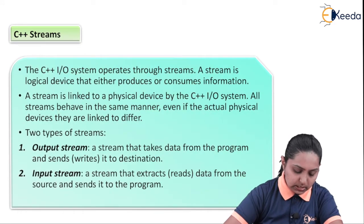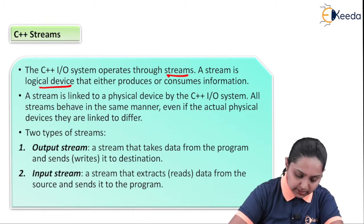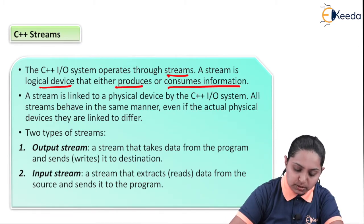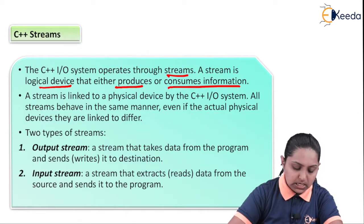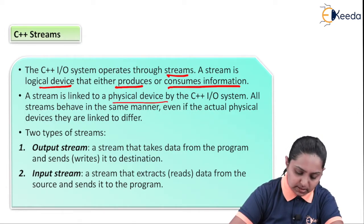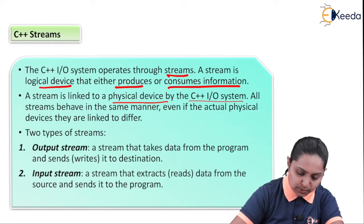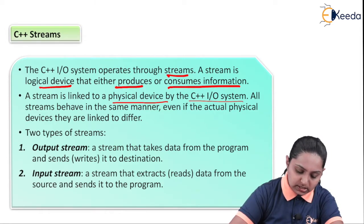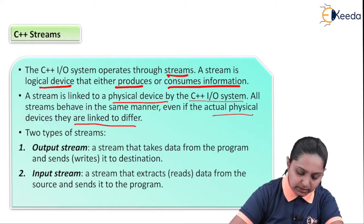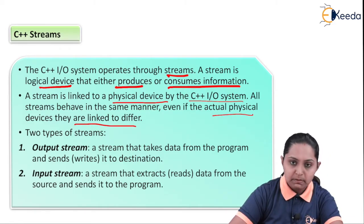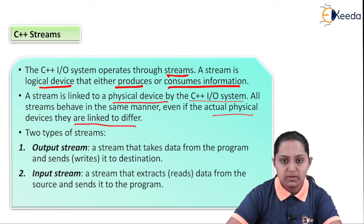The C++ IO system operates through streams. A stream is a logical device that either produces or consumes information. A stream is linked to a physical device by the C++ IO system. All streams behave in the same manner, even if the actual physical devices they are linked to are different.